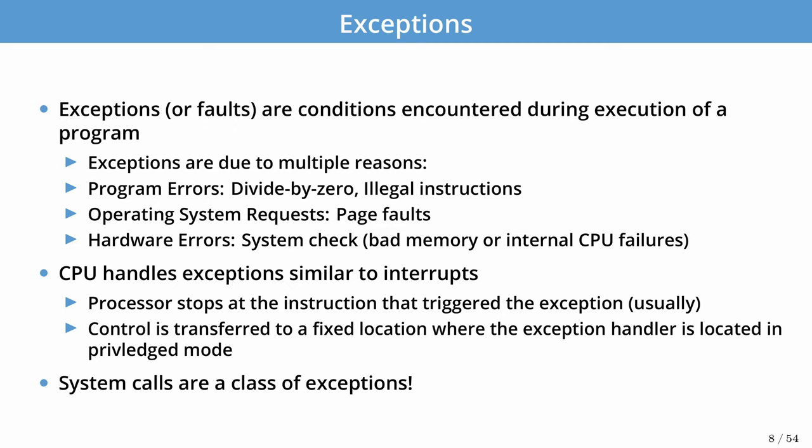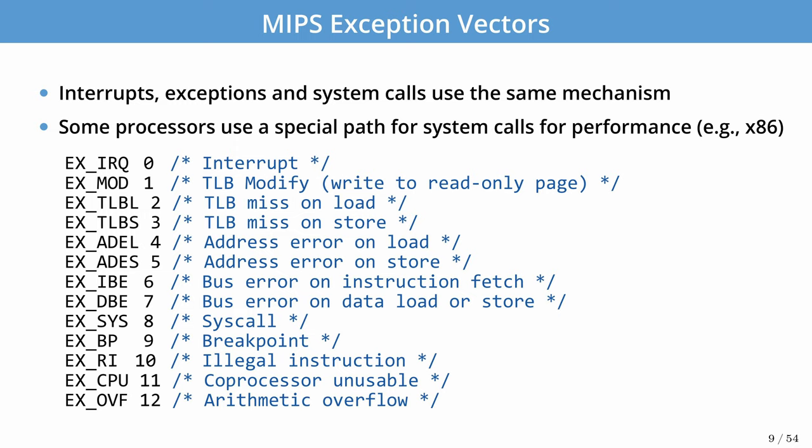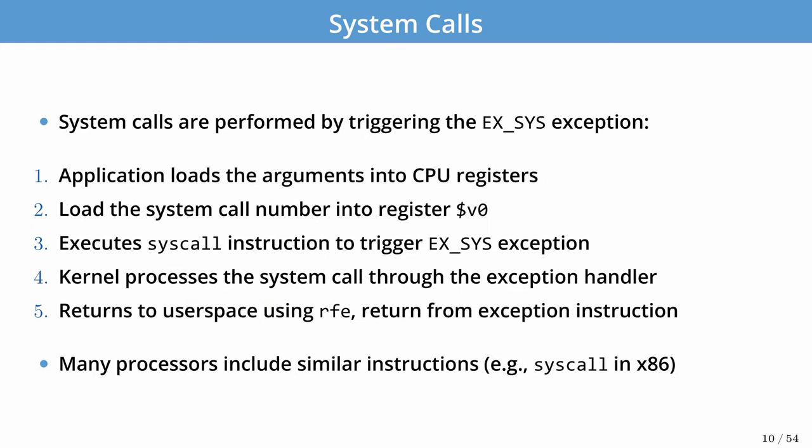System calls are a class of exceptions. Note that in some processors system calls have a customized path for performance, but they look and behave like any other exception path. In MIPS we have a bunch of exception vectors that can be triggered by the processor. There is a common path for interrupts, exceptions, and system calls. We also see TLB errors, address errors on load and store, bus errors from instruction fetches, breakpoints for debugging, and system calls in the middle. The main focus of today's lecture is the system call exception, but we'll mention one example using an interrupt later as well.